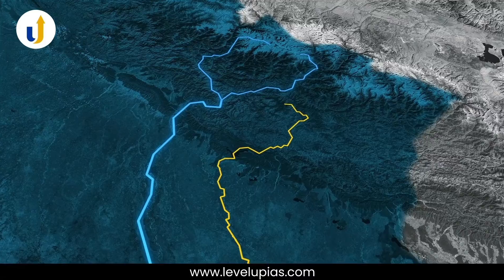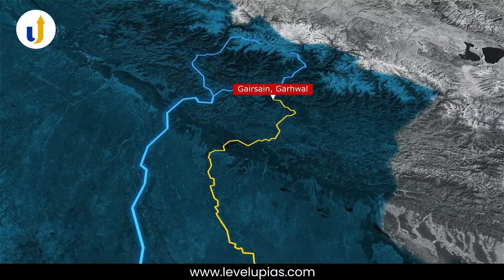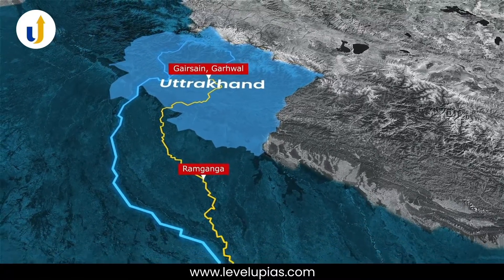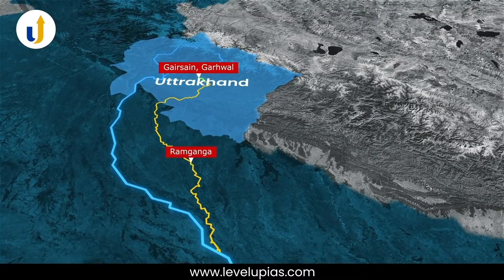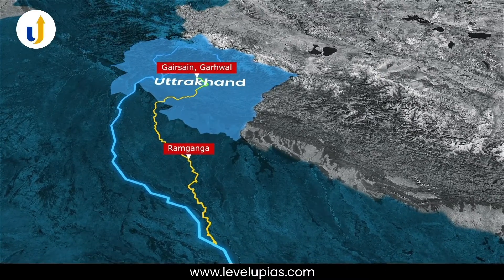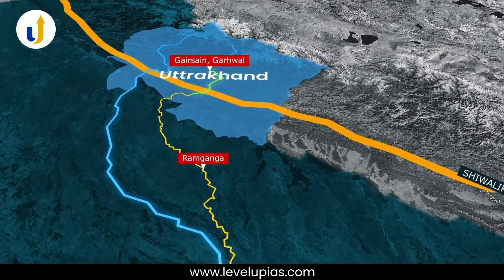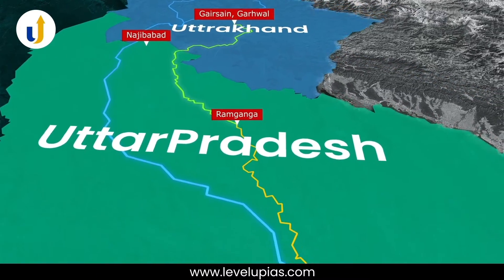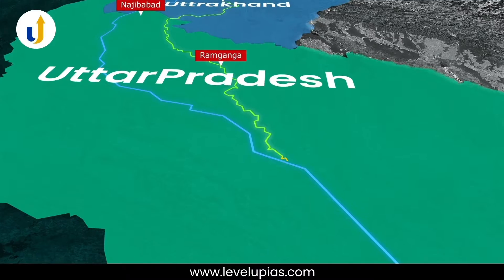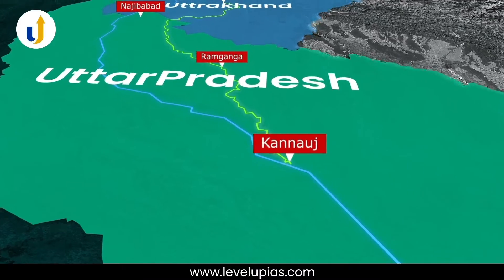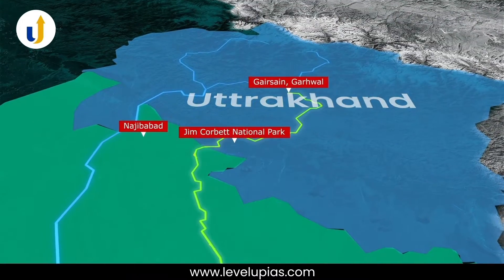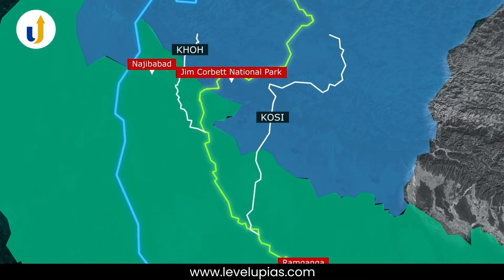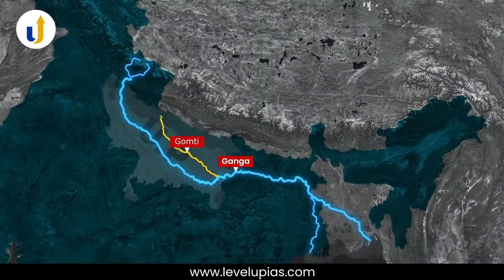The Ram Ganga River rises in the Garhwal Hills near the garrison of Uttarakhand. It changes its course to the southwest direction after crossing the Shivalik and enters into the plains of Uttar Pradesh near Najibabad. Finally, it joins the River Ganga near Kannauj. It flows through Jim Corbett National Park and its major tributaries are Kosi and Kho.